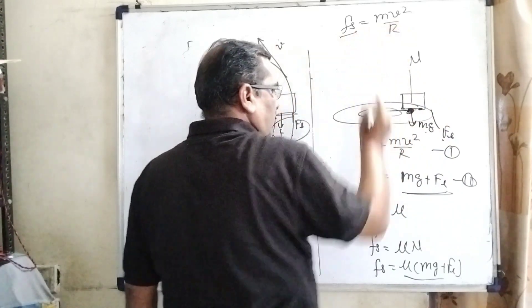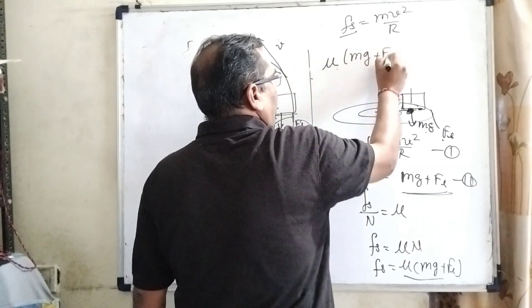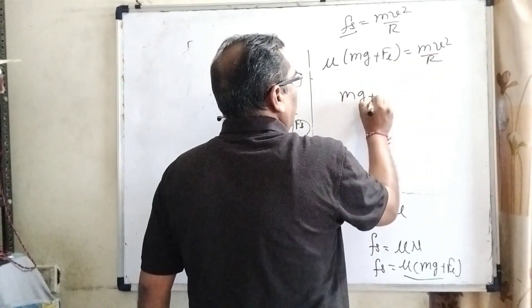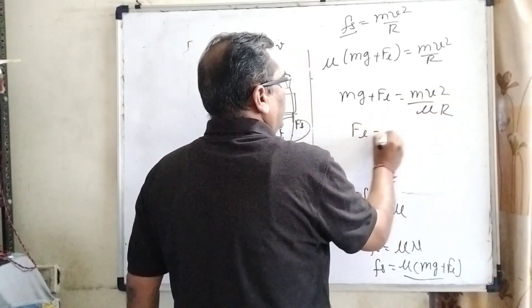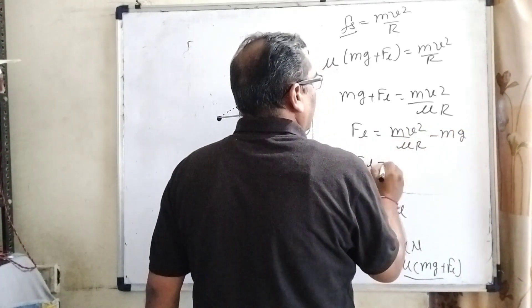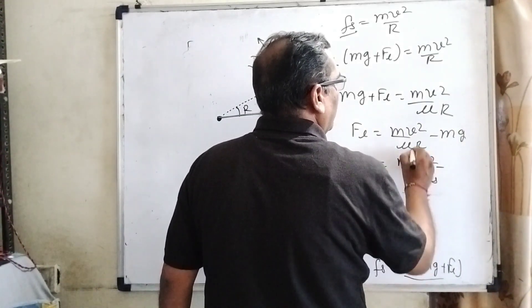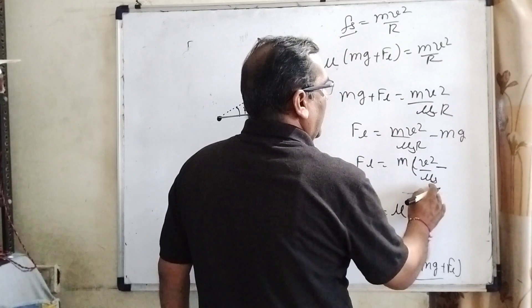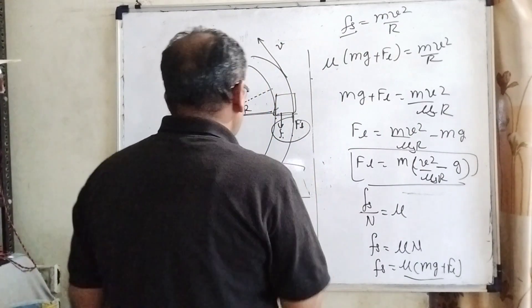So μ times (mg + fl) equals mv²/R. Then mg + fl equals mv² / (μs·R). Transposing mg to the right side gives fl equals m times (v² / μs·R − g).